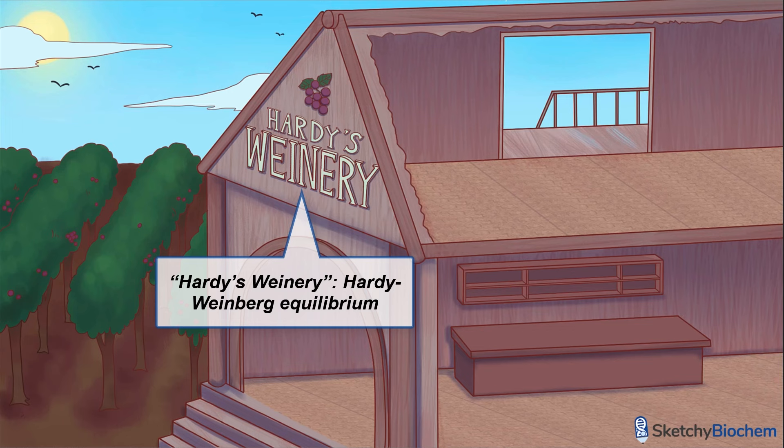For a population to be in Hardy-Weinberg equilibrium, there are five rules, or conditions, that the population must meet. These are called Hardy-Weinberg assumptions. If any of these five assumptions are violated, evolutionary forces are acting on the genetic variation of the population, and the population is not in Hardy-Weinberg equilibrium.